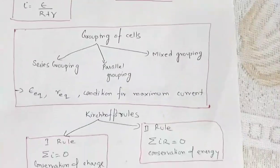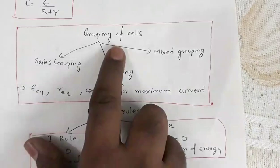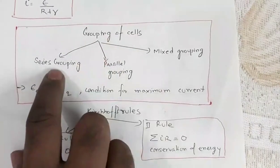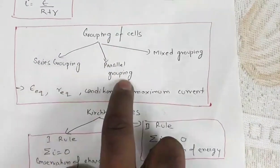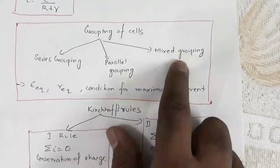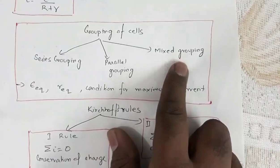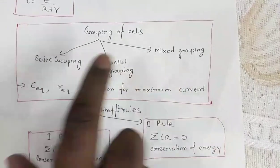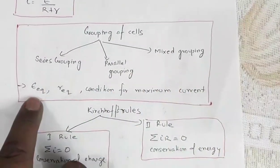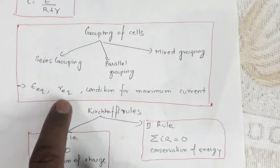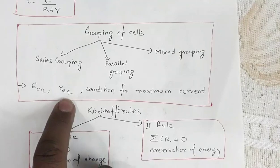Then comes grouping of cells — three types: series grouping, parallel grouping, and mixed grouping. For each case, you must be able to find the expression for equivalent EMF, equivalent internal resistance, and the condition for maximum current.